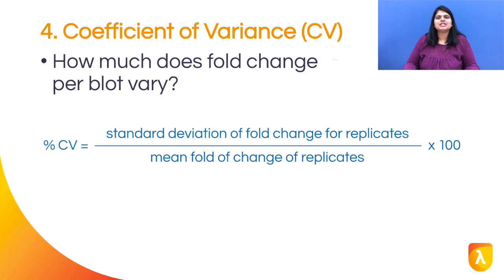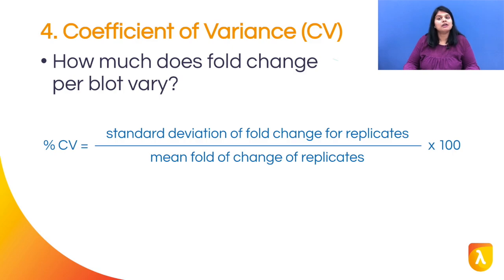How does the fold change value vary between blots? As I mentioned earlier, there will be unavoidable changes per blot, but we want to make sure the variability is coming from experimental variability and not from biological differences between biological replicates.